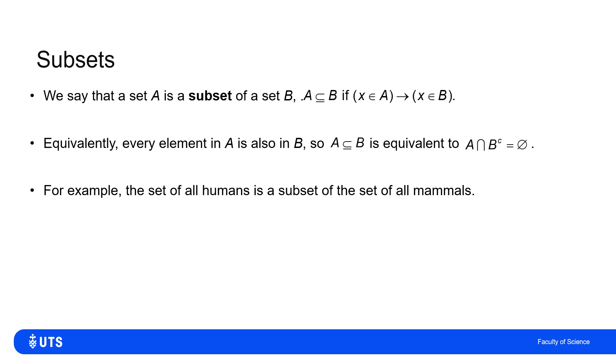There are many everyday linguistic examples of this. So I say that the set of humans is a subset of the set of mammals. Because, for example, which humans are not mammals? None of them. The set of humans and not mammals is an empty set. Every human is a mammal.